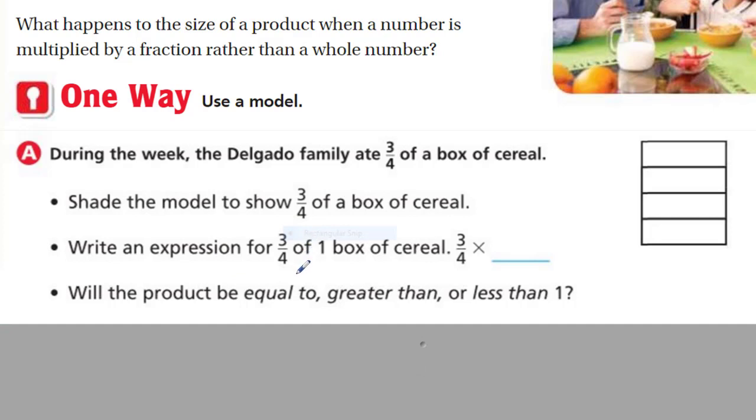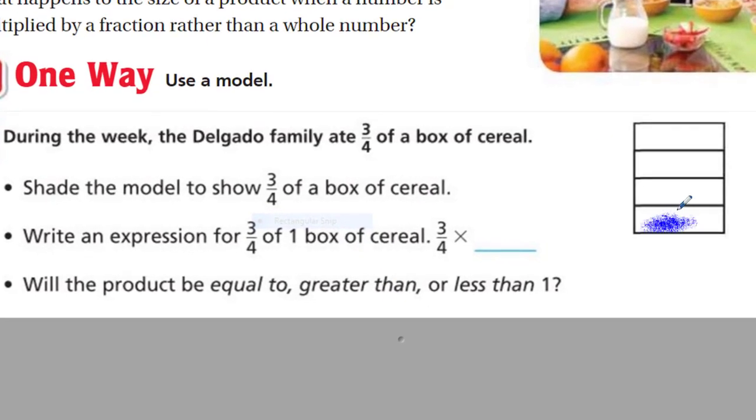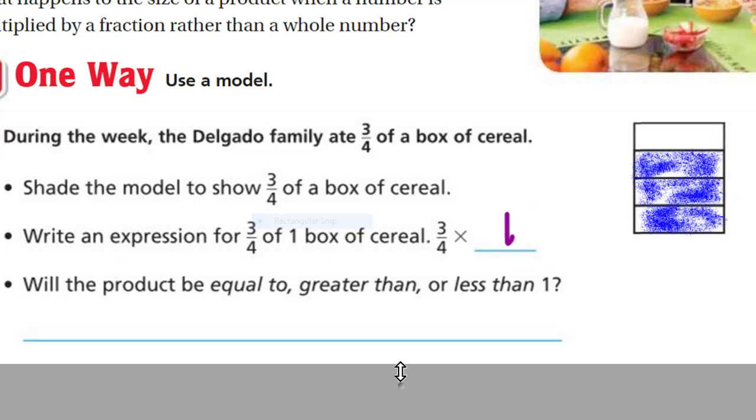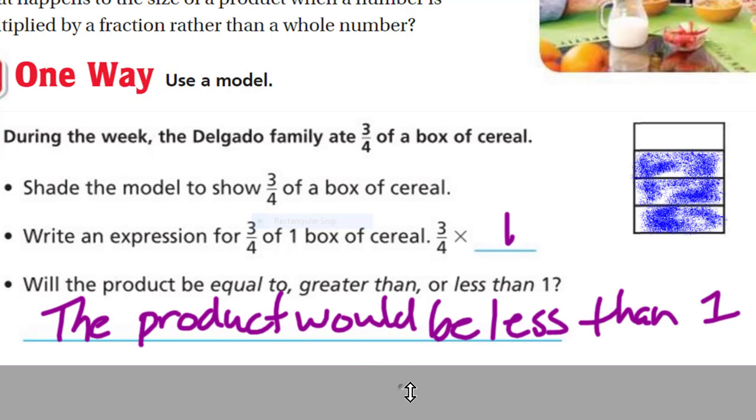During the week, the Delgado family ate 3 quarters of a box of cereal. Shade the model to show 3 quarters of a box. So I see 4 equal sections, so I'm thinking there's 1 quarter, here's 2 quarters, 3 quarters, and I better stop because that's all I have. It says write an expression. For 3 quarters of 1 box of cereal, basically 3 quarters times 1 whole box. Will the product be equal to, greater than, or less than 1? Based on the fact that 3 quarters of that 1 box, that number would have to be less than 1. The product would be less than 1, and I can see that by looking at the model. What do we know about the product of any number when it's multiplied by 1? We know that the number times 1 is that number. So in this case, it's not going to become larger because 3 quarters is being multiplied by 1.